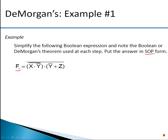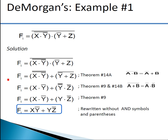Let's try to simplify this boolean expression. Write the given expression: f1 = (x · ȳ)̄ · (ȳ + z)̄. Now consider (x · ȳ)̄ as a single variable 'a', and (ȳ + z) together as variable 'b'. So now this expression becomes (a · b)̄. We know that De Morgan's first theorem applies here.